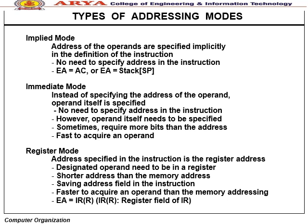Register mode — the instruction specifies a register address; the operand is in a register; shorter address than memory address; saves address field bits; faster to acquire an operand than memory addressing. EA = register field of IR.